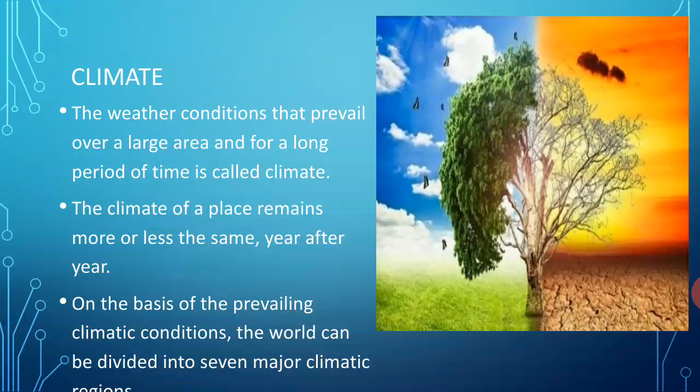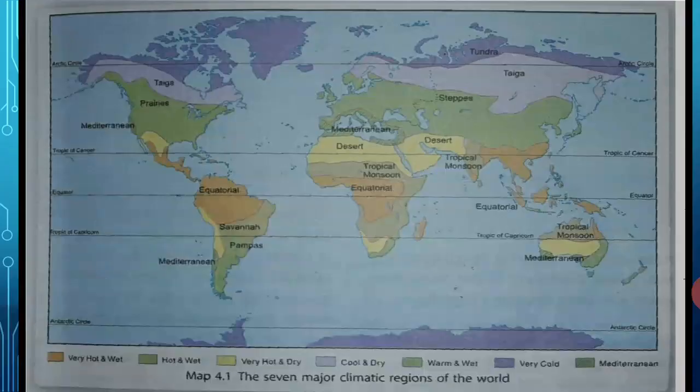On the basis of prevailing climatic conditions, the world can be divided into seven major climatic regions. Let's see these regions with the help of a world map. In this map you can see the seven major climatic regions of the world. The violet color indicates the very cold region.